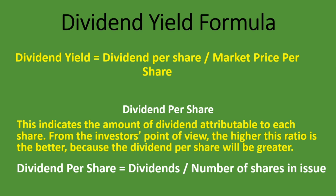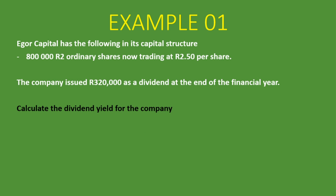Let's look at an example to help understand how to calculate the dividend yield and the dividend per share. We're told that Ego Capital has the following in its capital structure: 800,000 rand ordinary shares, now trading at R50 per share. We're also told the company issued R320,000 as a dividend at the end of the financial year. Dividend is what the company gives to shareholders from the profits it has made for the period — the return to shareholders from company profits.